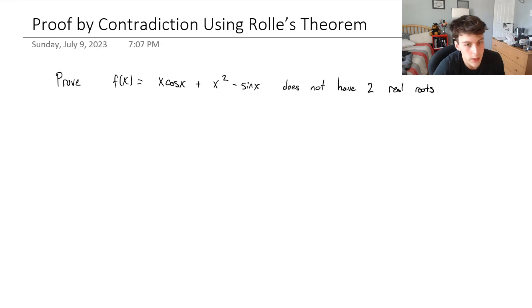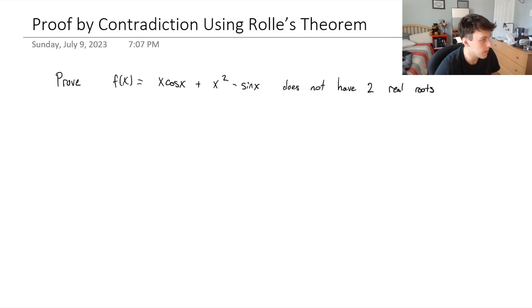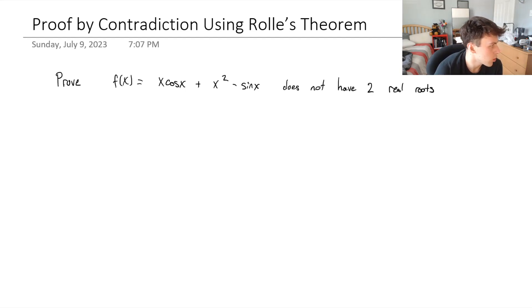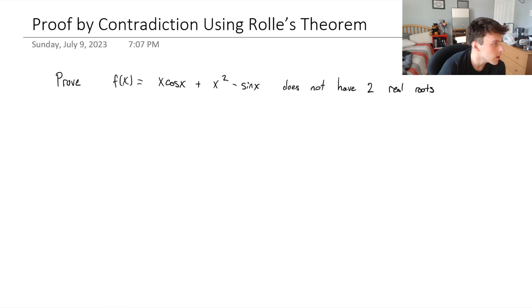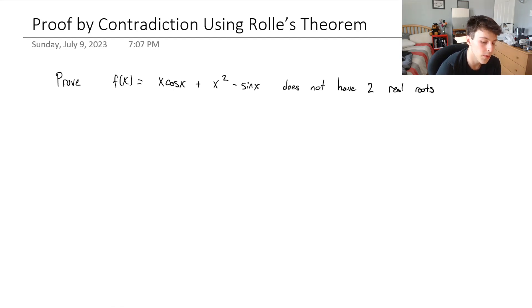In the last video, we did some introduction to Rolle's Theorem and did a couple of examples. In this video, I'd like to do a question where we're trying to prove that f(x) does not have two real roots, and we're going to use a contradiction and Rolle's Theorem in order to do this proof.